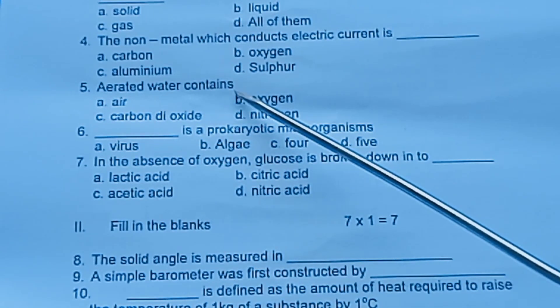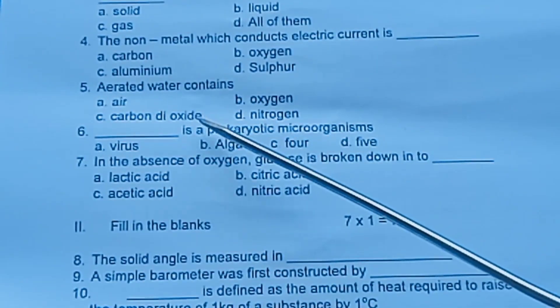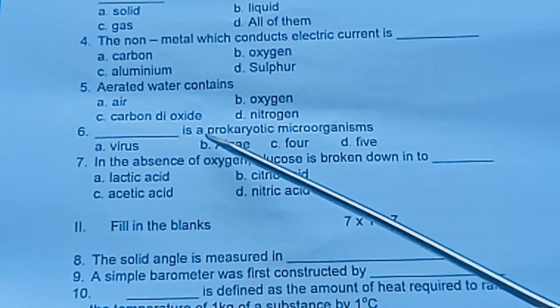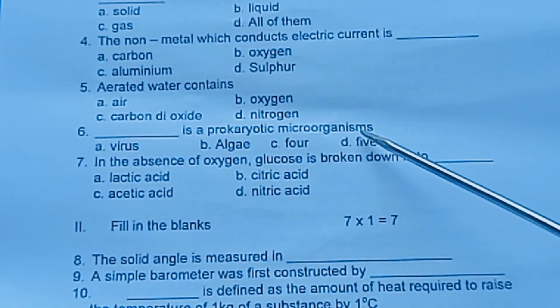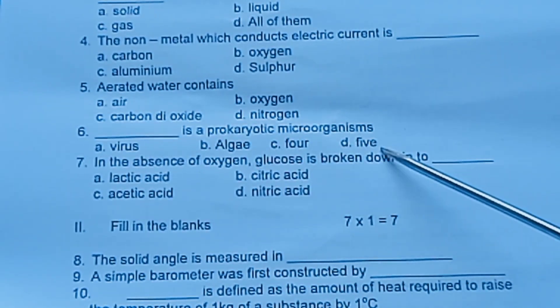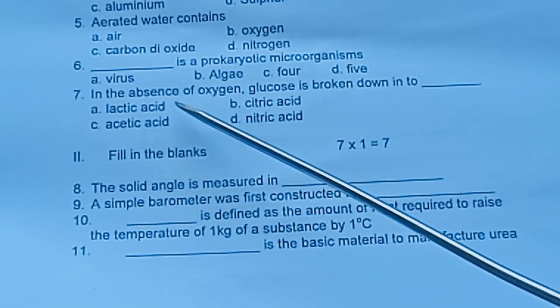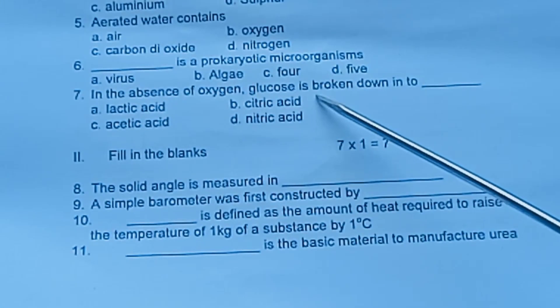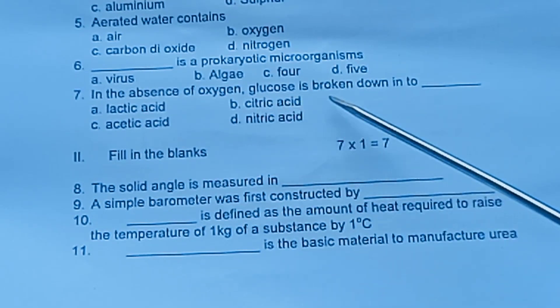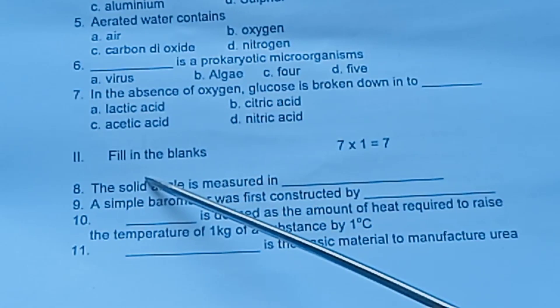Question 5: Aerated water contains - air, oxygen, carbon dioxide, or nitrogen. Question 6: One is a prokaryotic microorganism - virus, algae, four, or five. Question 7: In the absence of oxygen, glucose is broken down into - lactic acid, citric acid, acetic acid, or nitric acid.